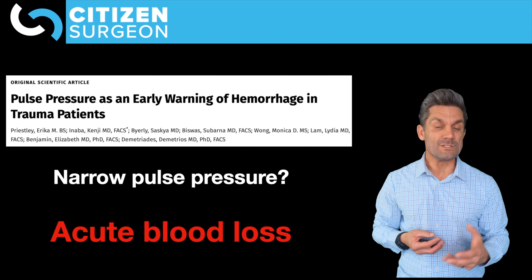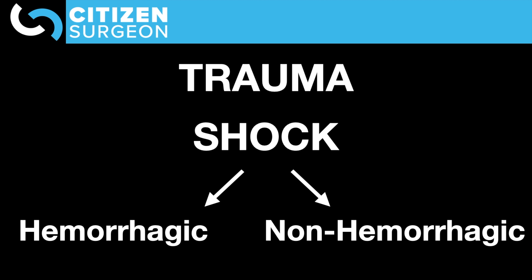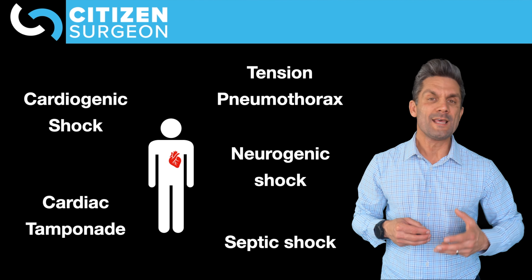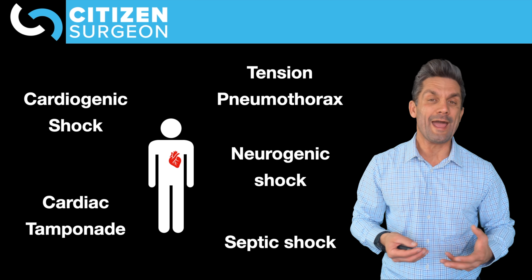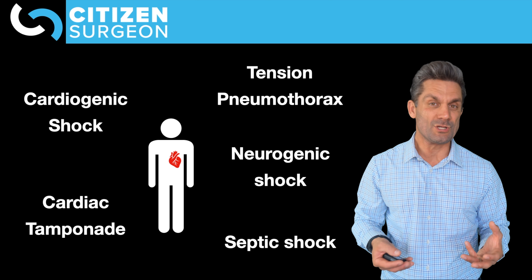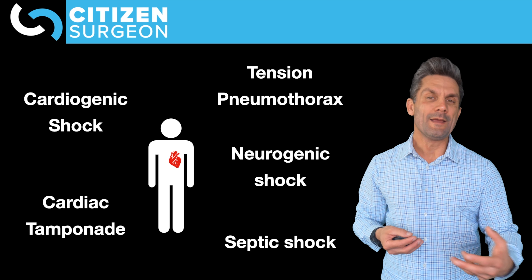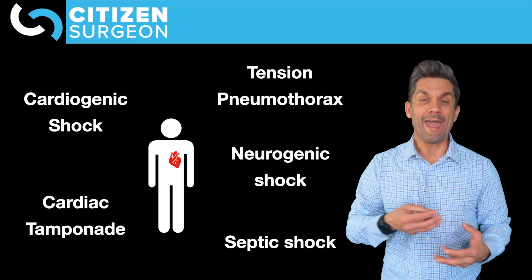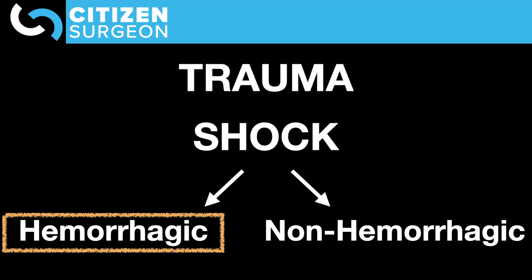Once we've recognized someone is in shock, we need to determine what type. Let's group it into hemorrhagic versus non-hemorrhagic. Non-hemorrhagic shocks include cardiogenic shock from blunt chest injury, obstructive shock from cardiac tamponade or tension pneumothorax, neurogenic shock, and septic shock in a delayed presentation. But because the vast majority of trauma patients are in hemorrhagic shock, let's focus there.